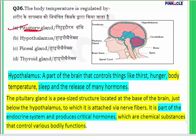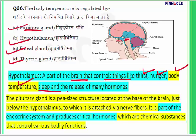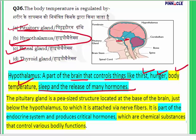The hypothalamus is a part of the brain and controls many functions including thirst, hunger, body temperature, sleep, and release of hormones. So it is the hypothalamus that controls body temperature. The answer for question 36 is B — hypothalamus.